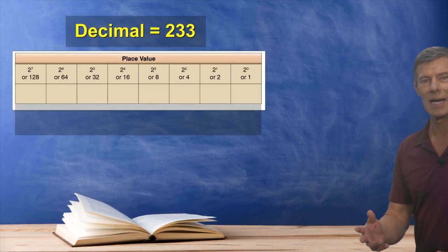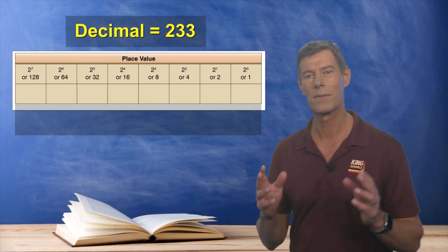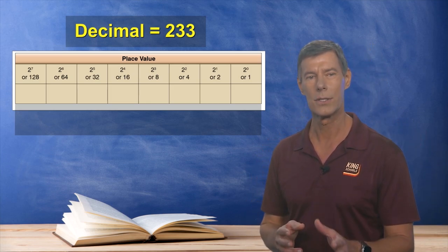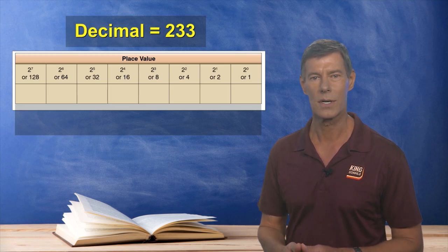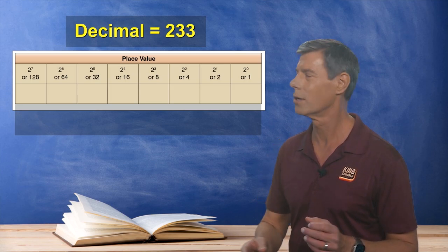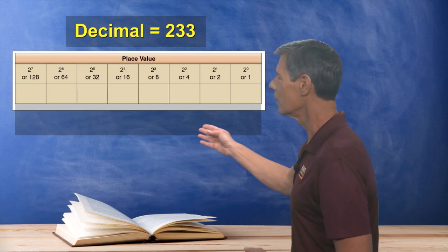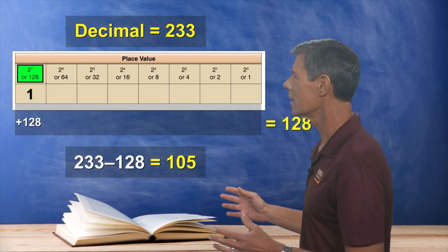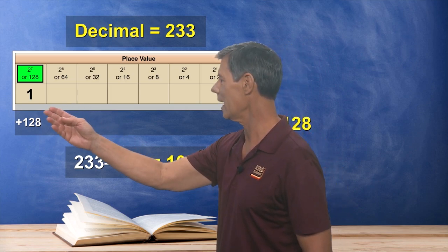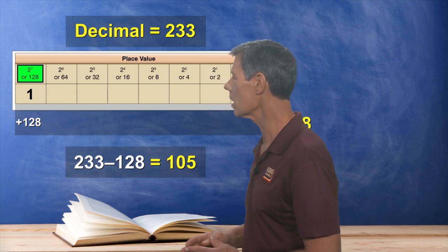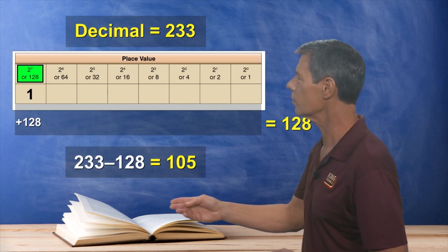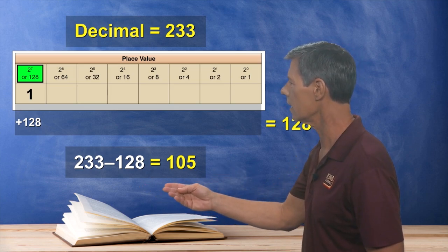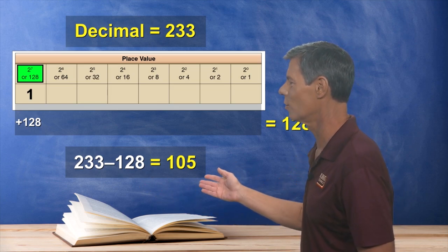Now you also might be asked on the knowledge test to convert a decimal number like 233 to binary. And to do that, we'll start with our number 233. Then we'll look at our chart here for the biggest number that we can subtract from it. In our case, it's this 128 right here. So we'll mark a 1 in this column first. Now 233 minus 128 results in 105 left over.